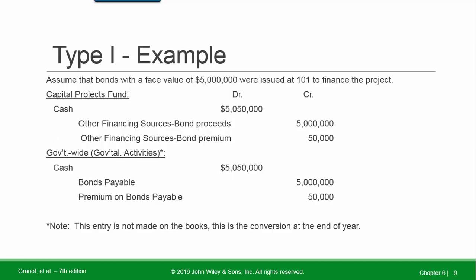Example: Assume bonds with a face value of five million dollars were issued at 101 to finance the project. In the capital projects fund: debit Cash for the full amount of $5,050,000; credit Other Financing Sources — Bond Proceeds for the face amount of $5,000,000; and credit Other Financing Sources — Bond Premium for the $50,000 difference. For government-wide: debit Cash for the full amount, credit Bonds Payable for $5,000,000 and Premium on Bonds Payable for $50,000. Remember, for government-wide the entry is not made on the books — it is simply a conversion at end of period, moving from Other Financing Sources to Bonds Payable and Premium on Bonds Payable.